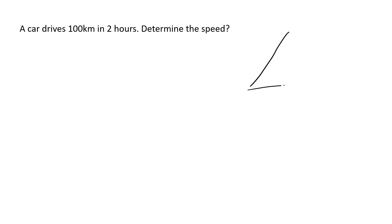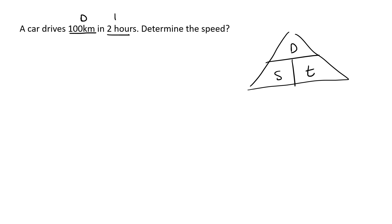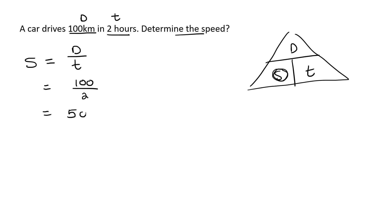We now know we've got this triangle that always has the distance at the top. Now, a car drives a hundred kilometers — that's the distance — in two hours, that's the time. Determine the speed. Using our triangle, we know that speed equals distance divided by time. So that's going to be 100 divided by 2, which gives us 50. Now, don't just say 50 — the units of speed, if you look on the dashboard of any car, you'll see that speed is measured in kilometers per hour.